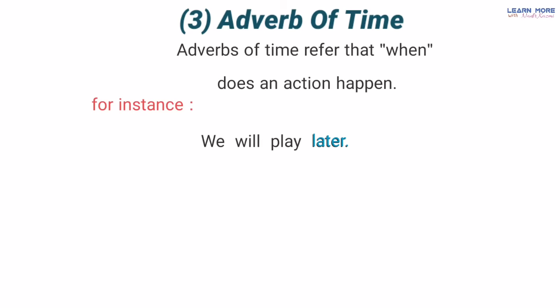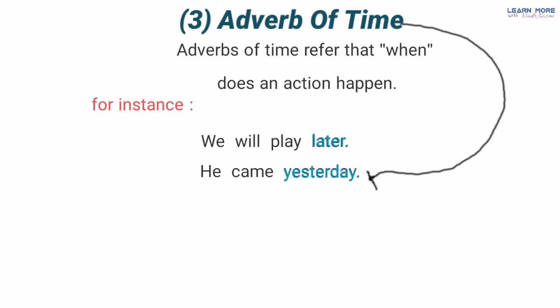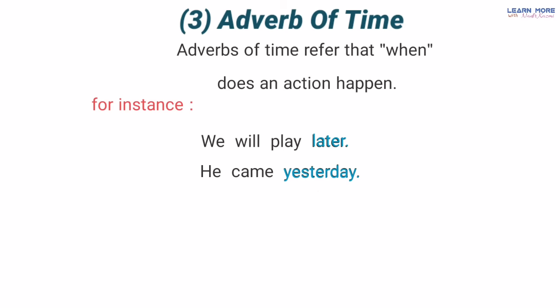'When did he come?' — woh kab aaya tha? 'He came yesterday' — woh kal aaya tha. Ab yahan par 'yesterday' ek adverb of time hai kyunke yeh uske kaam ke baare mein bata raha hai jo usne kiya tha — yani woh aaya tha, woh kab aaya tha? Yesterday, kal.